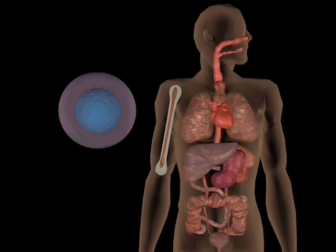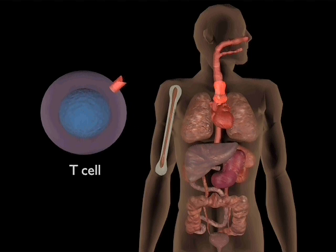T-cells replicate in the subcapsular region of the thymus. At this stage, they start to recombine genes for the T-cell receptor in an analogous way to the B-cell's recombination of antibody genes.